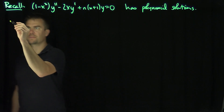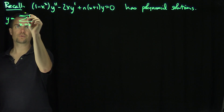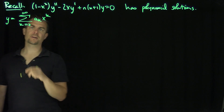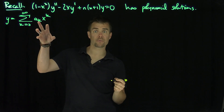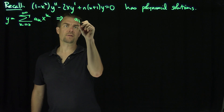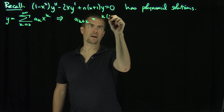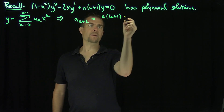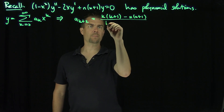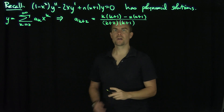The idea was that we wrote y as an infinite series — the sum from k equals 0 to infinity of a_k x to the power k, because 0 is an ordinary point — and we derived a recursion relationship for these coefficients. That recursion relationship was the following: a_{k+2} equals k(k+1) minus n(n+1), all over (k+2)(k+1), times a_k.